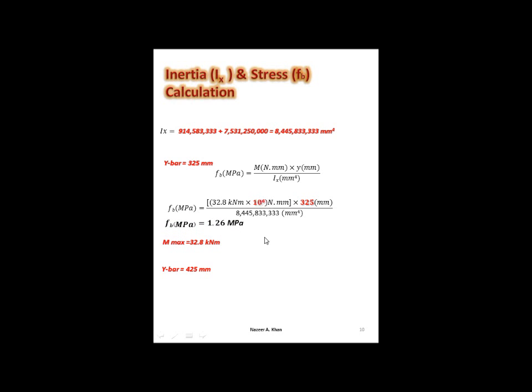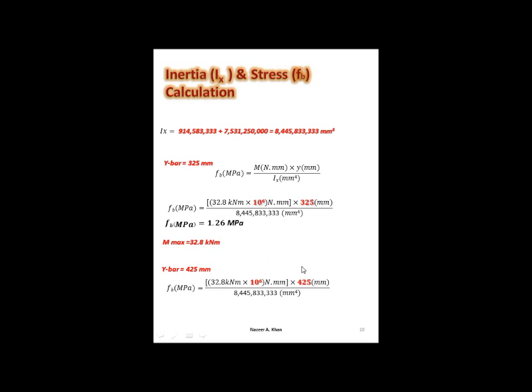When I crunch the numbers, I have 1.26 MPa for the upper part above my neutral axis. The outer edge will have 1.26 MPa stress. For the lower half, I run the formula again — the only thing that changes is the y-bar. When I crunch the numbers again, not a significant increase but it must be calculated: we have 1.65 MPa.